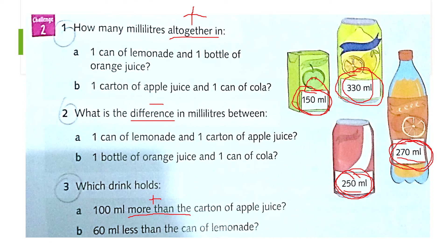Part B: which drink holds 60 milliliters less than the can of lemonade? The can of lemonade is 330 mL. 'Less than' means you have to minus. Take 330 milliliters minus 60 milliliters, then look at the pictures and find which one matches your answer.